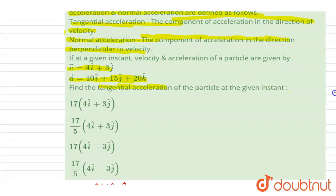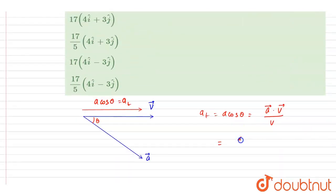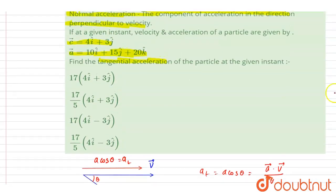It will be 40 plus 45. In division, if you see here, this is 40 plus 15 into 3, which is 45.